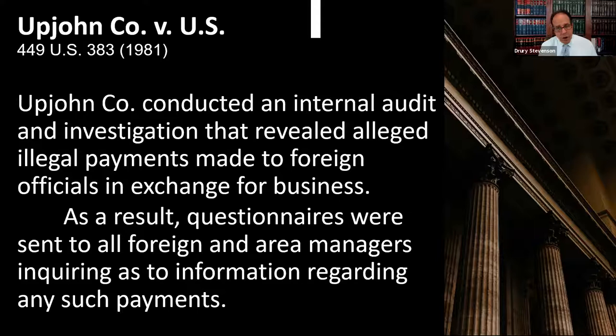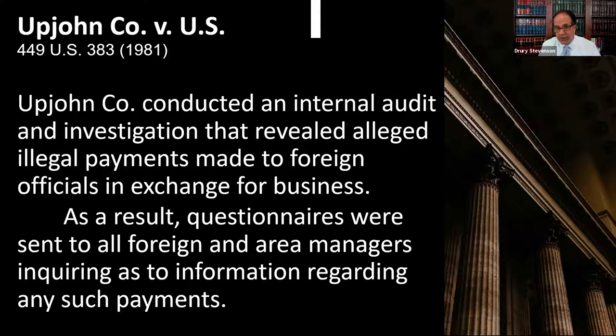Upjohn found out that in one of their overseas offices, a mid-level manager had bribed a foreign government official or officials in order to get some government contracts, a waiver of customs, or something like that — basically bribed local officials. We have laws against that here; we have laws against Americans bribing foreign officials overseas. So Upjohn realized they had a problem, and the board of directors asked their lawyer, their general counsel, to do an internal audit. They knew they were going to be in trouble with the feds, and they wanted to find out if this was an isolated incident or actually a widespread problem in their overseas offices around the world.